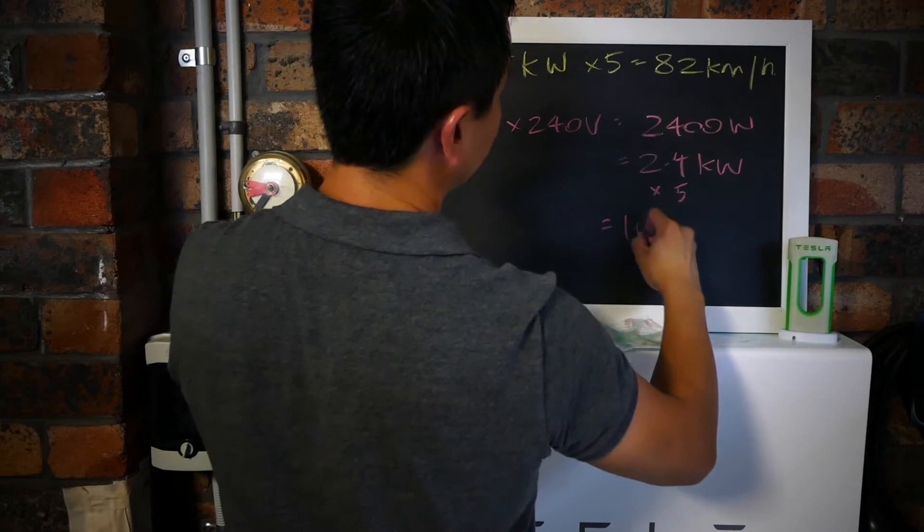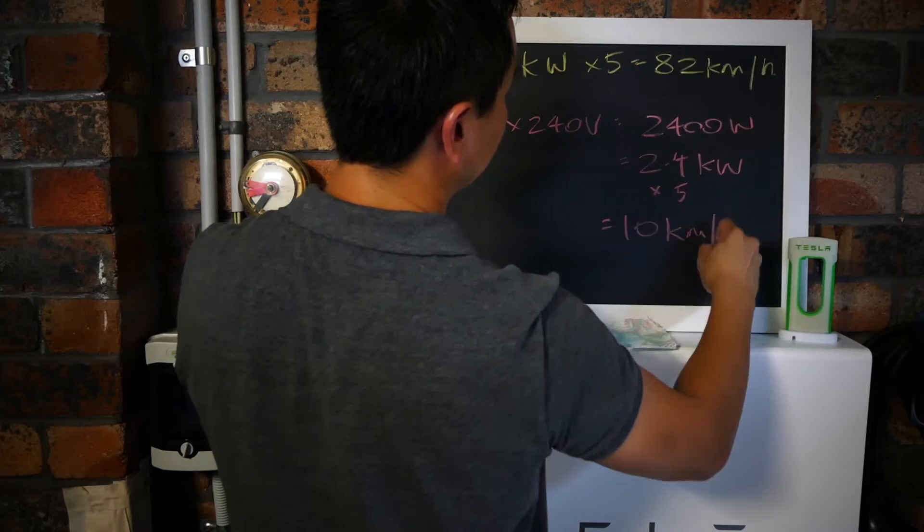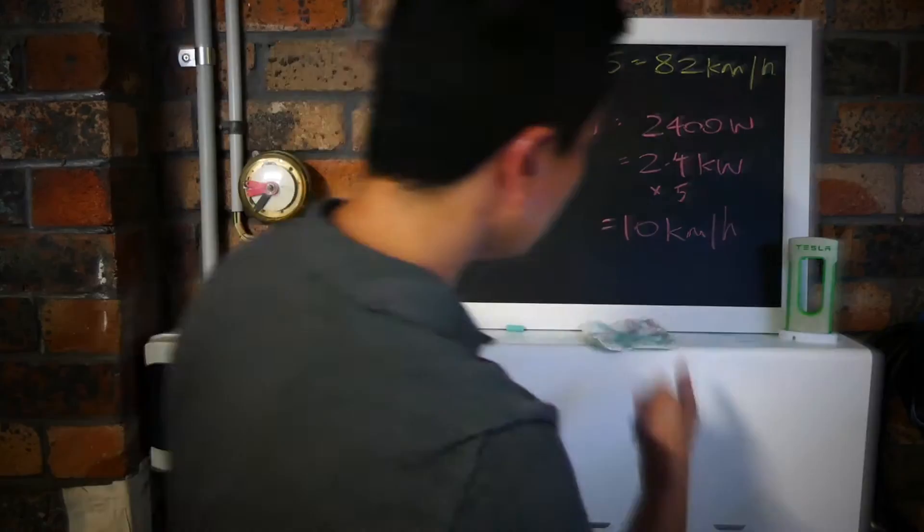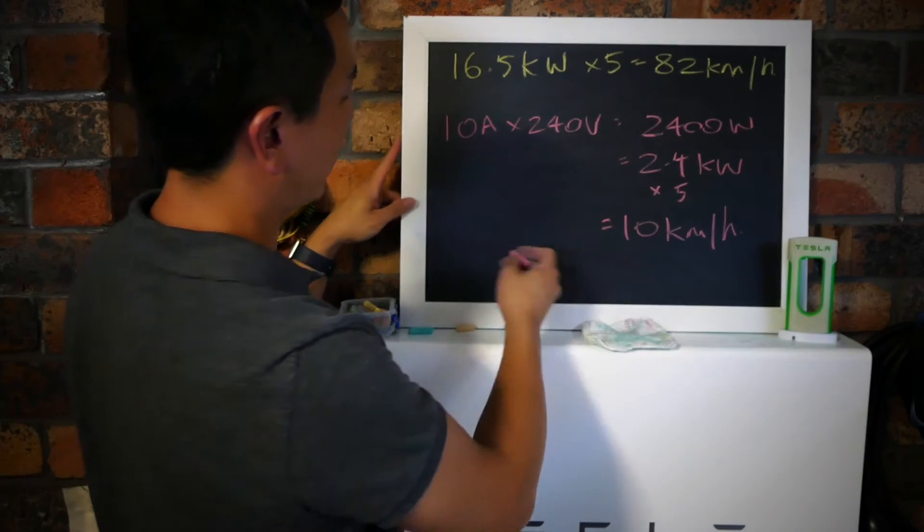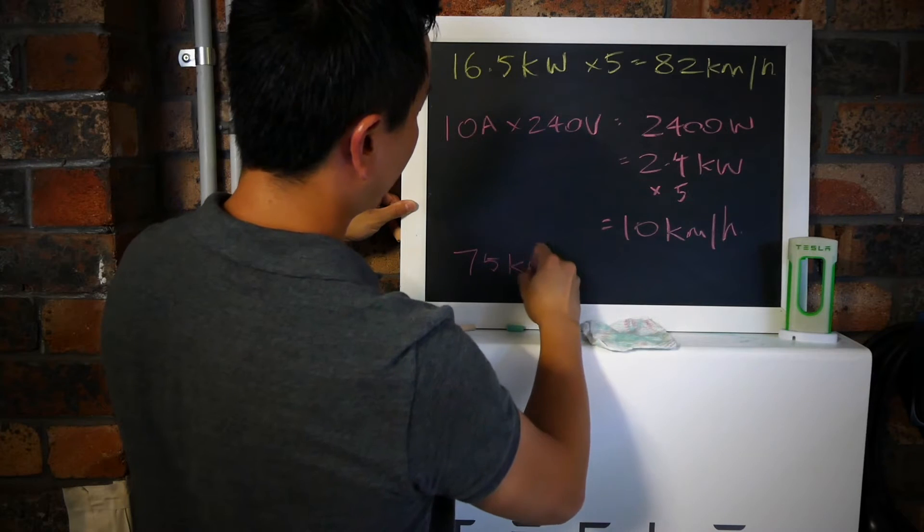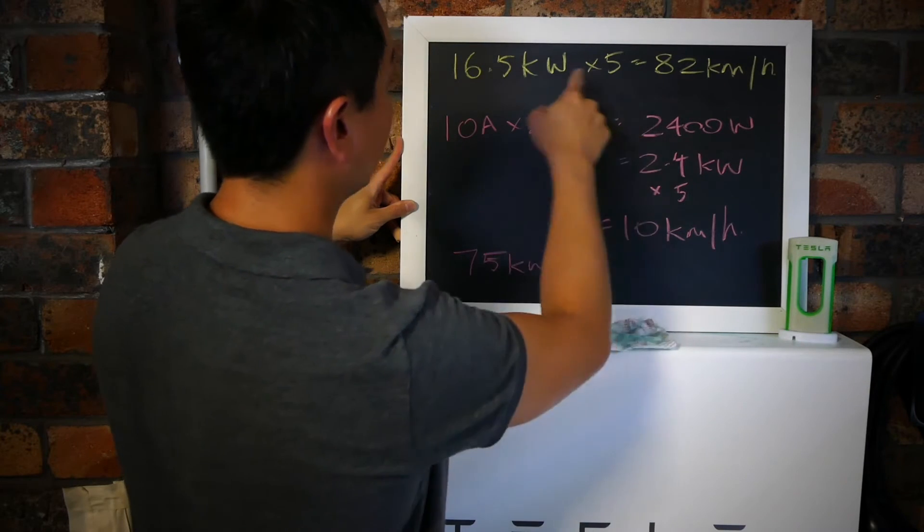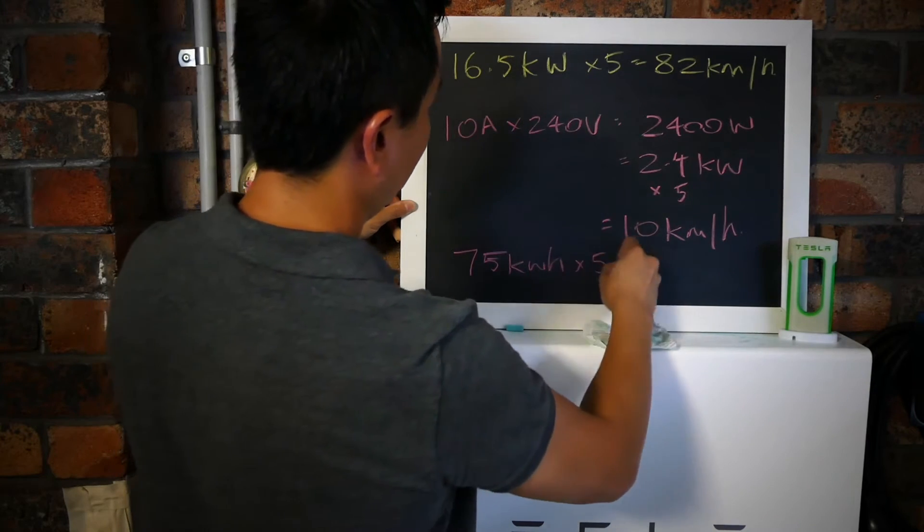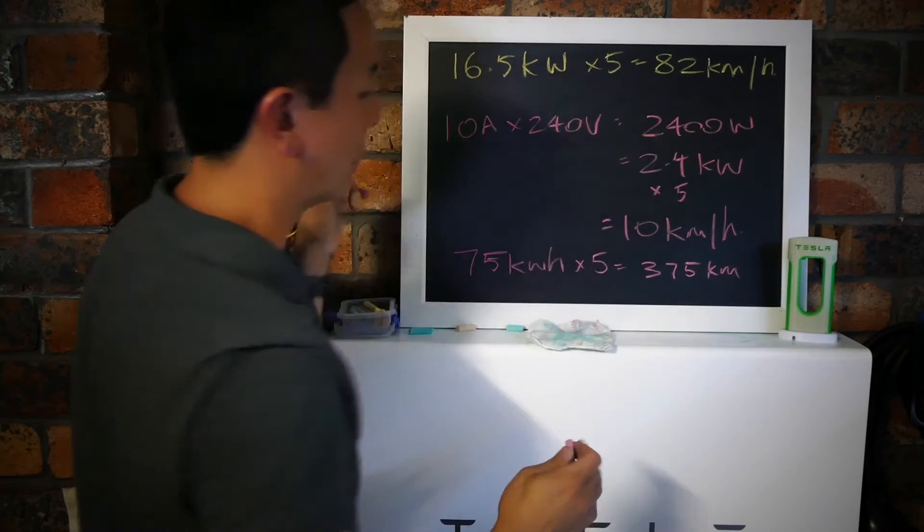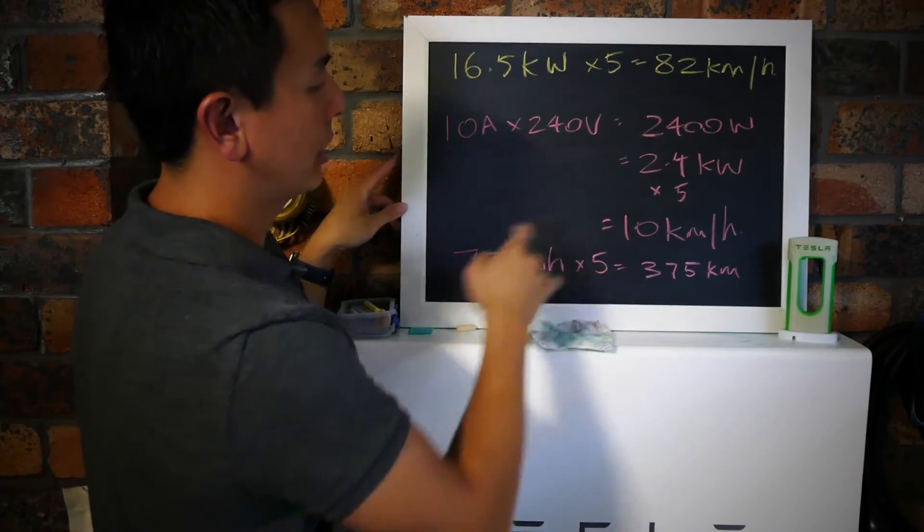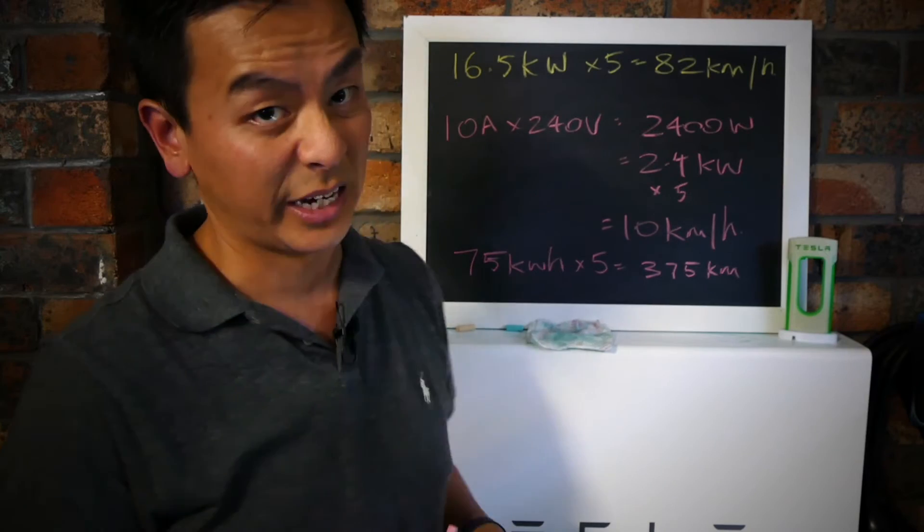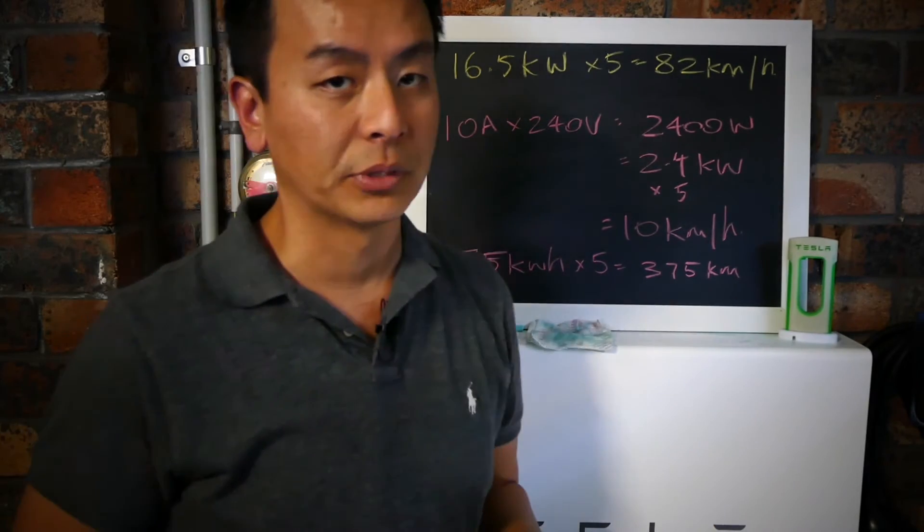If you have 10 amps of current and your house is 240 volts, the maximum you'll get is 2,400 watts or 2.4 kilowatts. Multiply that by five - you'll be charging at 10 kilometers an hour. If you have the base model 75 kilowatt-hour battery, that's going to take you 37 hours, so not the best option if you drive a lot.